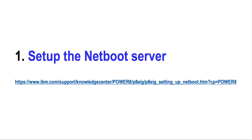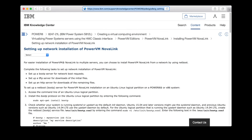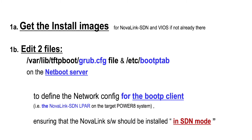Step 1: we set up the netboot server. The URL shown here gives all the details for setting up the netboot server. On the netboot server, we do two things. Step 1a: get the install images for NovaLink SDN and VIOS if they are not already there.